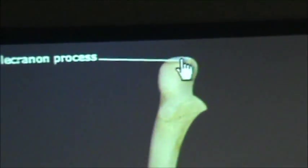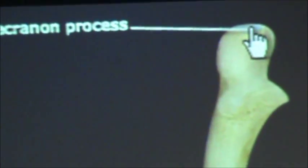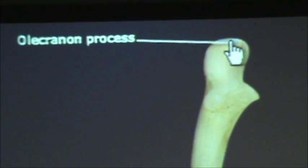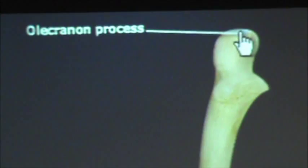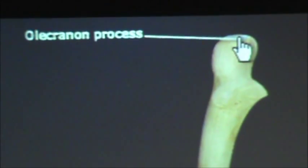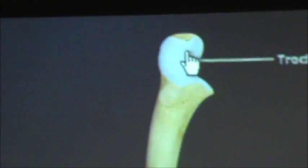Up top here we have what is called the olecranon process, and this articulates with the olecranon fossa of the humerus.